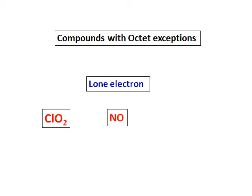Some examples are ClO2, NO, and NO2. Let's look at their Lewis structures now.